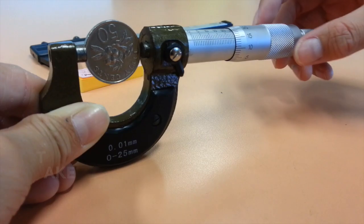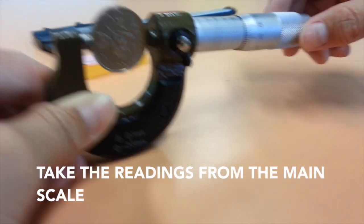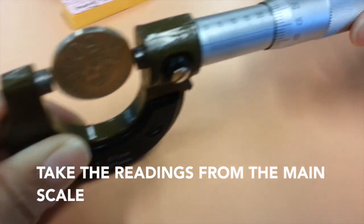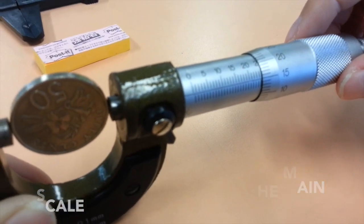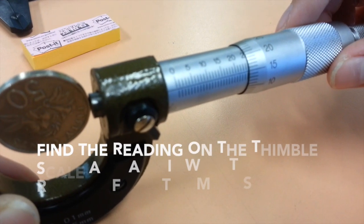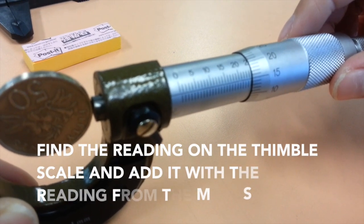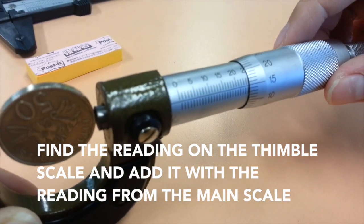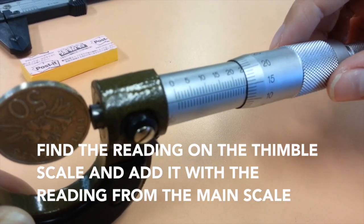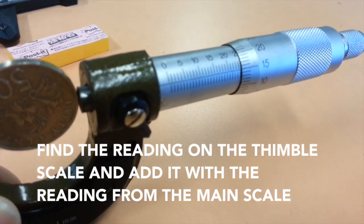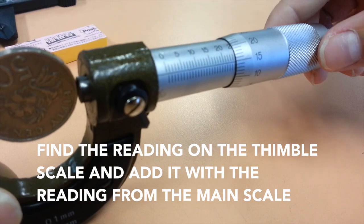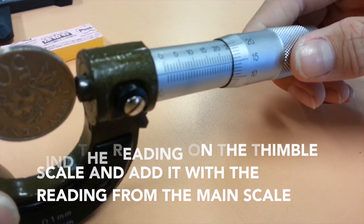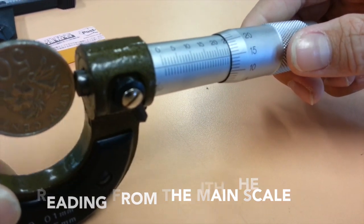To achieve the measurements, we will take the readings from the main scale which is currently 24.5 mm as each division of the main scale is 0.5 mm. Next, we will add the reading from the main scale with the readings on the thimble scale. The current value of the thimble scale is 0.15 mm because the number on the thimble scale is 15 times 0.01 mm. And since the thimble scale has 50 divisions with each being 0.01 mm, the total diameter is 24.65 mm.